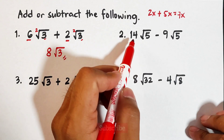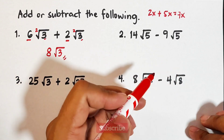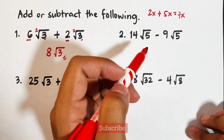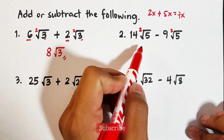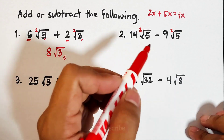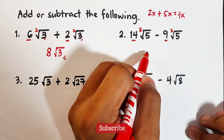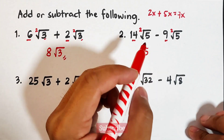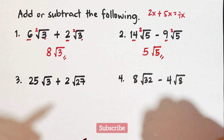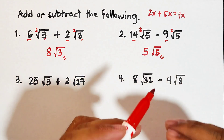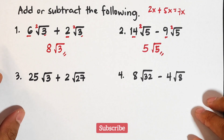For item number 2, we have 14 square root of 5 minus 9 square root of 5. We check if they are the same — yes, they have the same index and the same radicand. So we subtract: 14 minus 9 equals 5, then copy the common radical. The answer is 5 square root of 5.